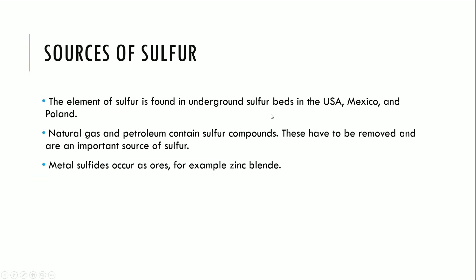The sources of sulfur are found mainly in underground sulfur beds in the USA, Mexico and Poland. Natural gas and petroleum contain a moderate amount of sulfur compounds. These have to be removed and are also an important source of sulfur. Metal sulfides occur as ores — one example is zinc blende, which you should know already in terms of the extraction of metals.